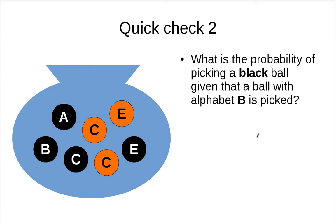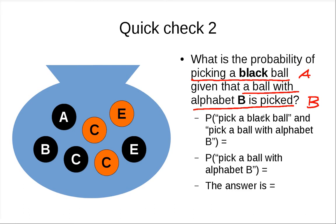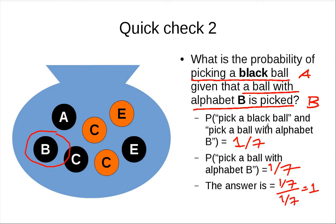Another check: what's the probability of picking a black ball, given that a ball with alphabet B is picked? P(A∩B) — picking a black ball with alphabet B — is 1/7. P(B) — picking a ball with alphabet B — is also 1/7. So the answer is 1, meaning if you know a ball with alphabet B is picked, you know for certain it's a black ball.